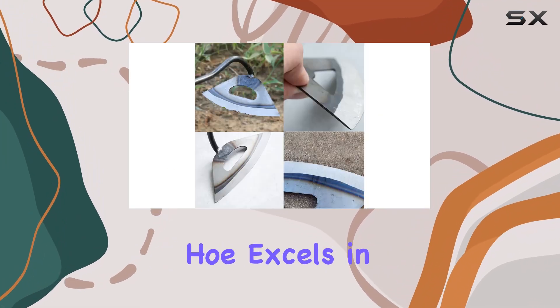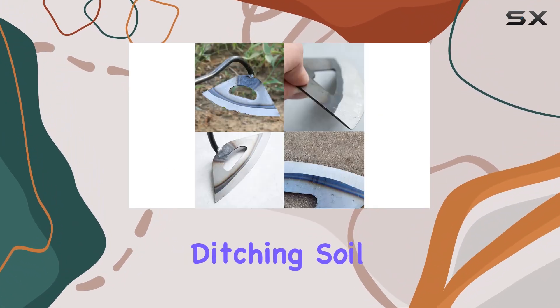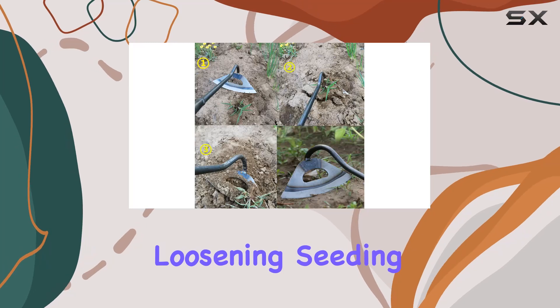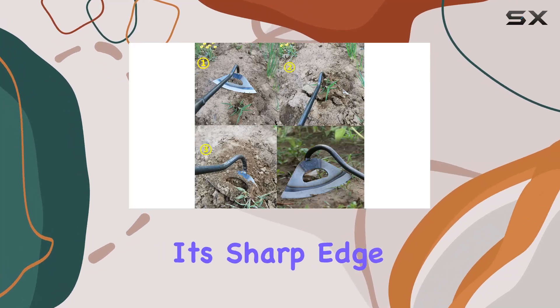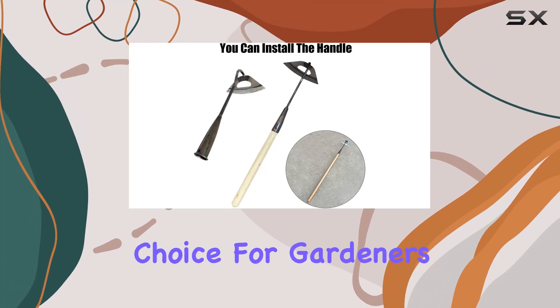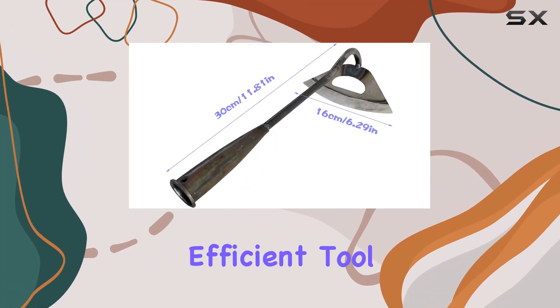The All-Steel Hard and Hollow hoe excels in household weeding, ditching, soil loosening, seeding, and plowing. Its sharp edge and robust build make it a standout choice for gardeners looking for a durable and efficient tool.